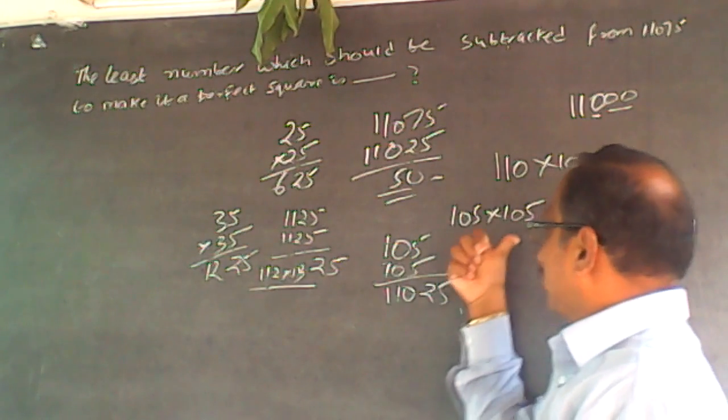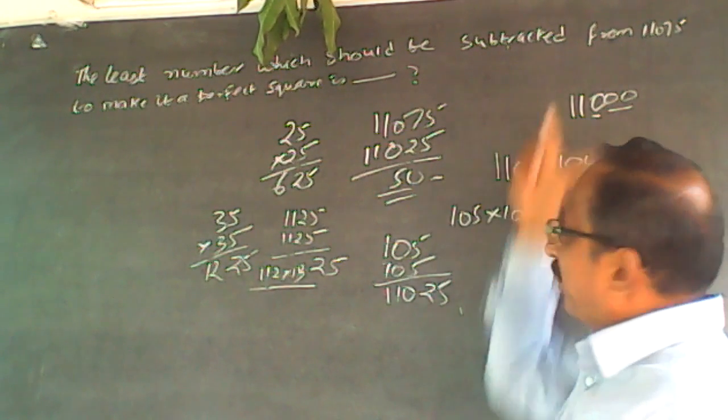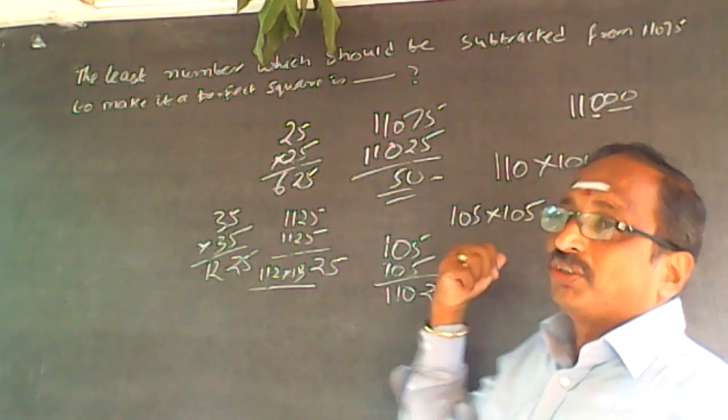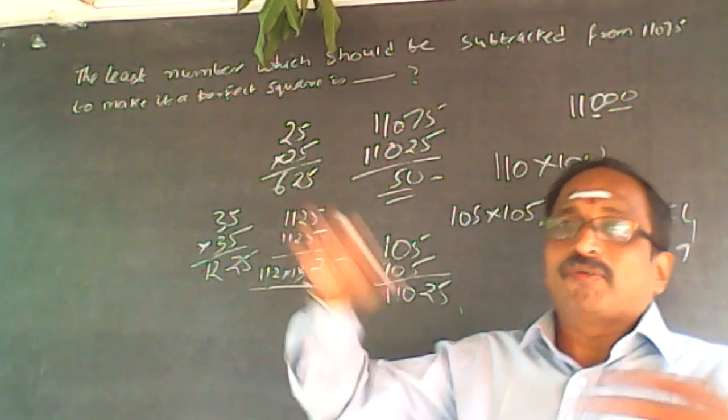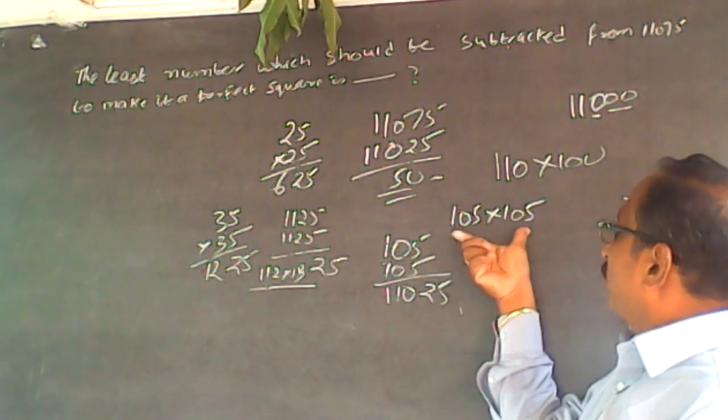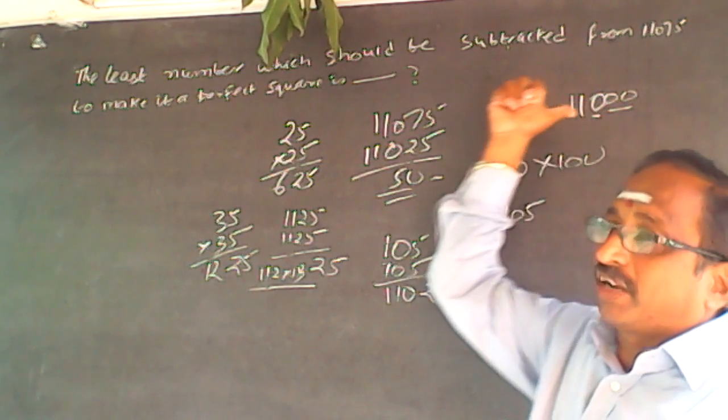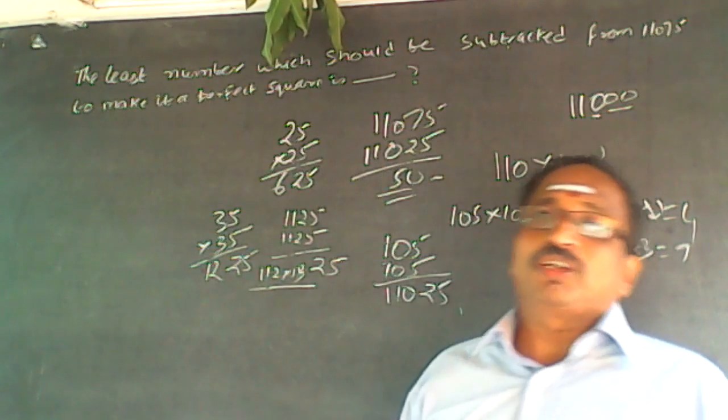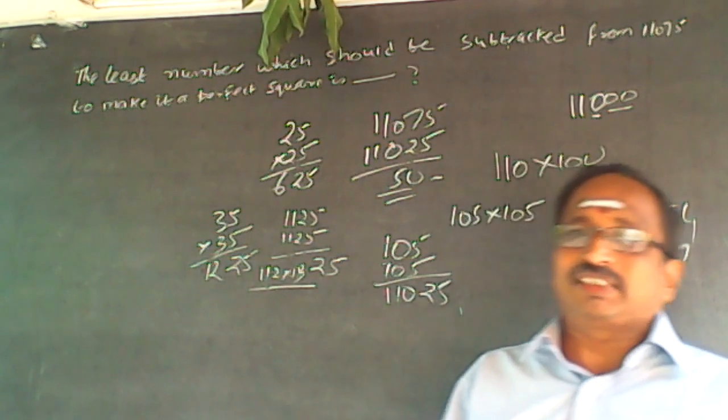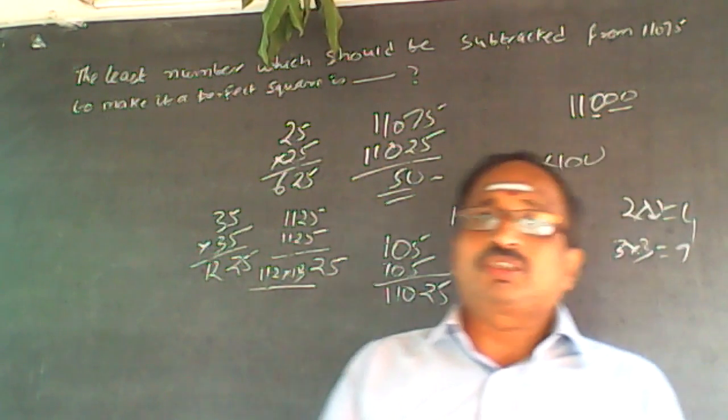See what you are doing like this. In case you get a number that is greater than 11025, then check for 104 and 105. You do not have to do from 1 to 102. Supposing 11025 is greater than 11075, then check for 104, it will be a closer one. That is the easier way of finding out the closer squares.